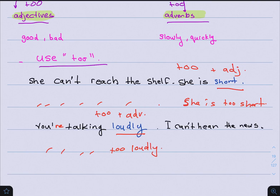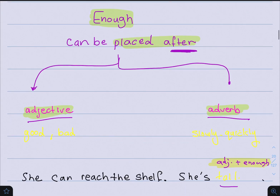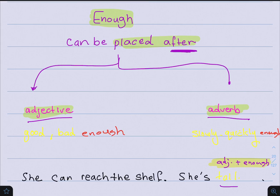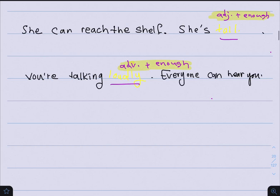Now let's move on to 'enough.' As I explained, enough means the amount needed or wanted — the exact right amount. It usually comes in a positive meaning. 'Enough' can be placed after the adjective or after the adverb. So: good enough, bad enough, slowly enough, quickly enough. For example: She can reach the shelf — she is tall. Tall is an adjective, so: She is tall enough. You are talking loudly — loudly is an adverb, so: You are talking loudly enough.